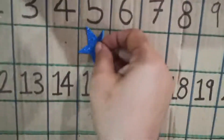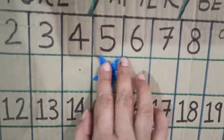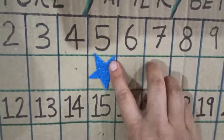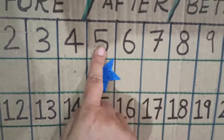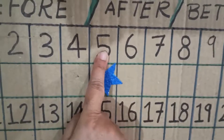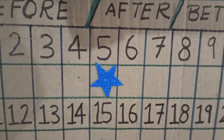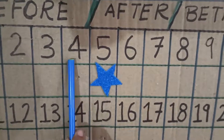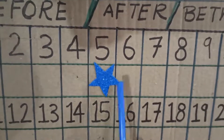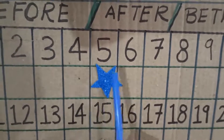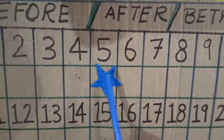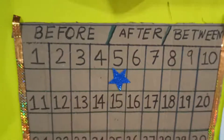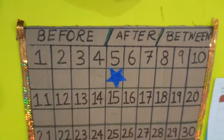Now I am keeping the star on number five. Five is the between number — this is the before number and this is the after number. This way you can play with your friends. Thank you.